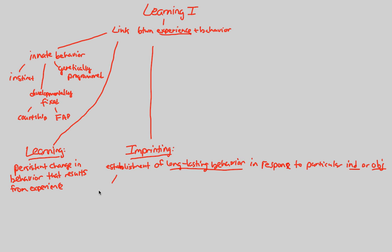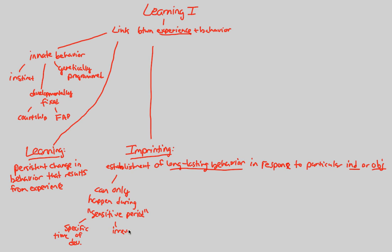Imprinting can only happen during a certain time — very early on in the animal's development. We call this the sensitive period. This is the period at which the animal can have an imprinting event act on them. If imprinting does not happen during the sensitive period, it will not happen at all. This is a very specific time during development, usually right upon or just after birth. Once imprinting happens, it is irreversible and will stay within the individual as a true, strong link between experience and behavior.